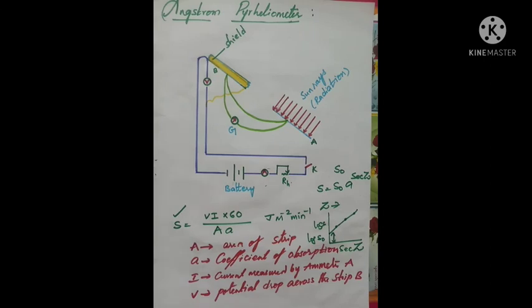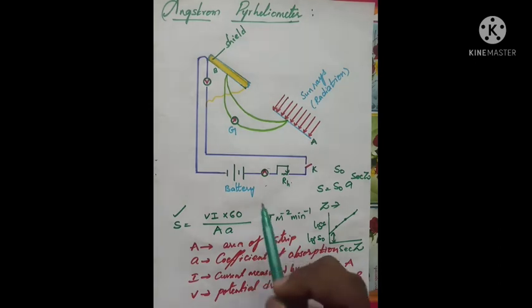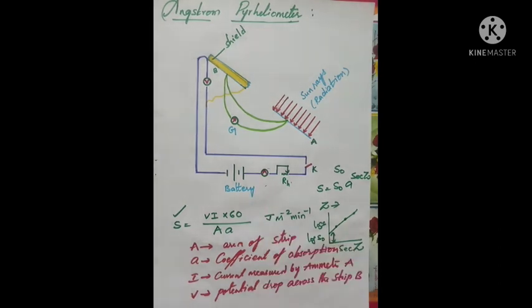This is the Ångström pyrheliometer. With this instrument, we can measure the solar constant very simply. The key components are two strips made of manganin or platinum, a galvanometer, voltmeter, ammeter, rheostat, and a battery — a very simple yet effective experiment.